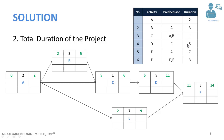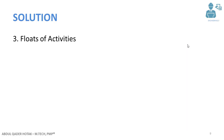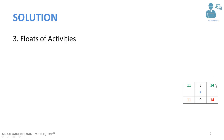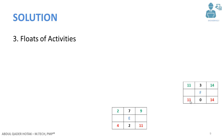Now let's go to the third part: calculate the floats of activities. In the previous step we did a forward analysis to find early starts and early finishes. To obtain the floats, we do a backward analysis to find the late finish and late start of each activity. For activity F, the early finish is 14 and the early start is 11. The activity cannot be delayed beyond day 14, so the late finish is 14, and subtracting the duration gives a late start of 11.